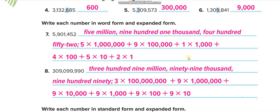Welcome back guys. Here is part two of lesson one: place value through millions. The first question in part two, question number seven: write each number in word form and expanded form. They already give us the number in standard form and we have to write it in word form and expanded form.